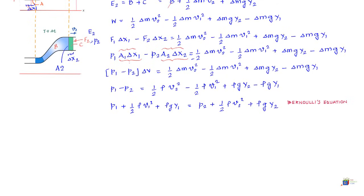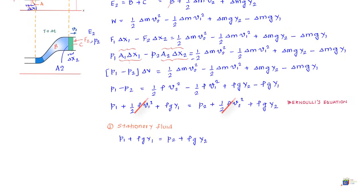The first interpretation is that of a liquid which is static — that is, V1 and V2 are both zero. In that case the equation becomes P1 minus P2 equals rho g into Y2 minus Y1, which equals rho g H. This is what was learned earlier: when a liquid is stationary, the pressure difference between two points equals rho g H, the product of density, g, and the distance separating those two points. So Bernoulli's equation validates the static liquid situation.